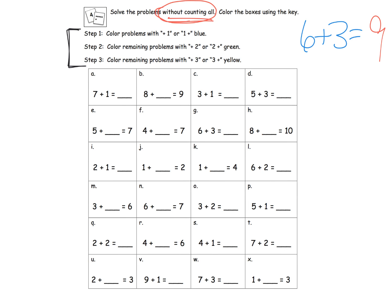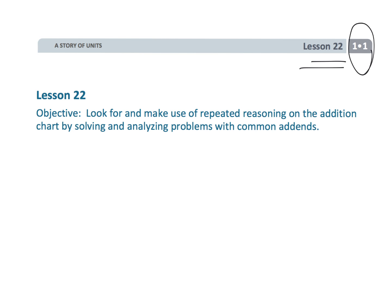Use green to color all the plus-twos and two-pluses, and yellow to color all the plus-threes and three-pluses. Students will see nice patterns and learn to recognize when to use the commutative property, the doubles method, or the doubles-plus-one method. This is a great place for students to put it all together. That wraps up first grade module one, lesson 22, where students look for patterns in the addition chart to make addition simpler and more efficient.